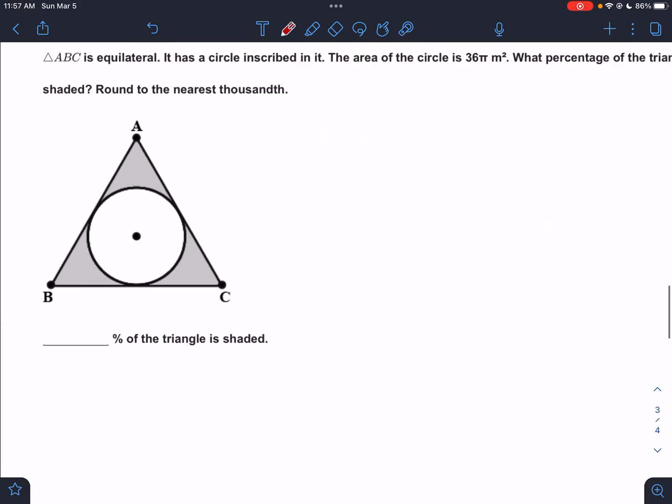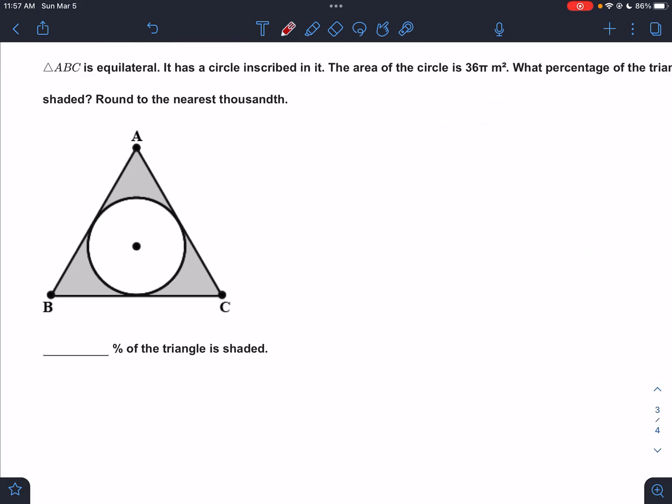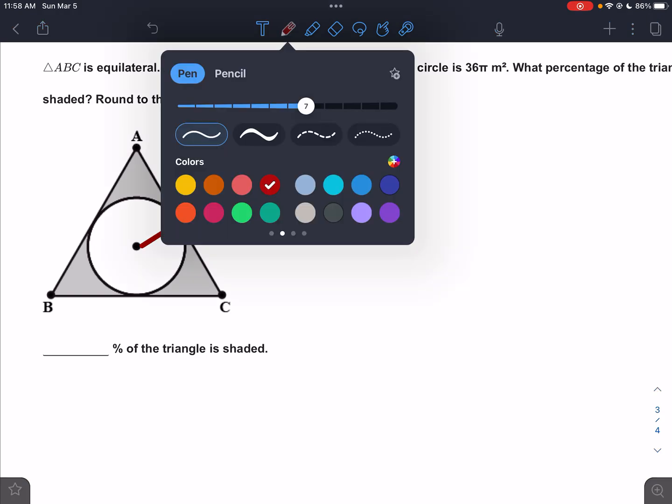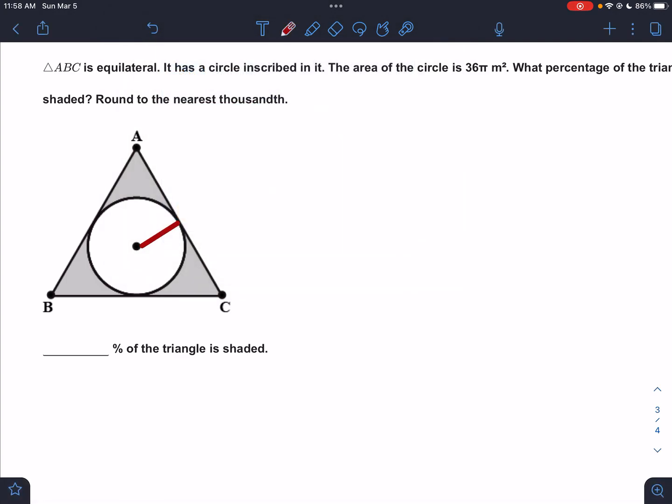ABC is equilateral. It has a circle inscribed in it. The area of the circle is 36π, so that's going to be key. So we know that if we're working on the circle, area is πr².